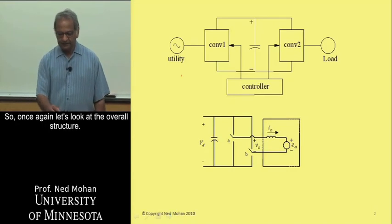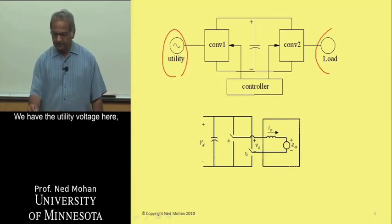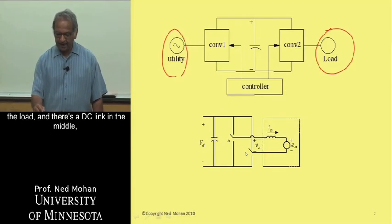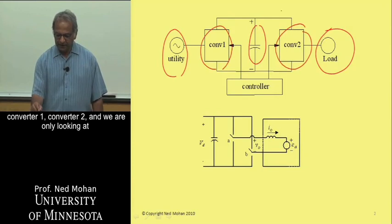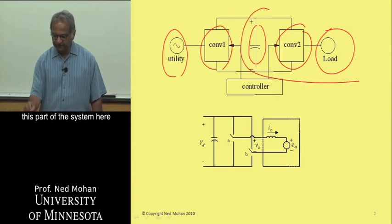let's look at the overall structure. We have the utility voltage here, the load, and there's a DC link in the middle, converter 1, converter 2, and we are only looking at this part of the system here.